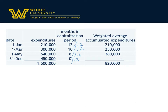If I take my principal — the amount of the expenditures — times the rate, times time, I'll get the weighted average accumulated expenditures. What I have is $820,000 as the weighted average that I would use for my interest rate calculation. So notice: the company may have spent $1.5 million, but they've got $820,000 in the weighted average that they could apply the interest rate to for the entire year.